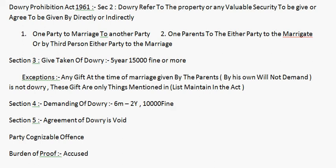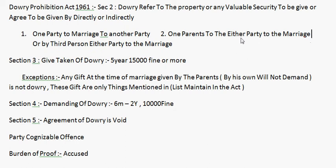Koi auga — one parents to either party to the marriage, ya one parents to either party with a parents from the other parents, or to demand or a third person from the other parents.